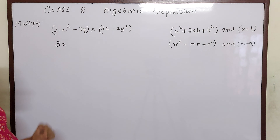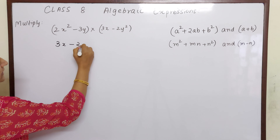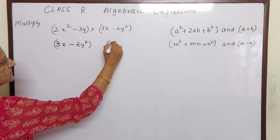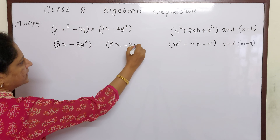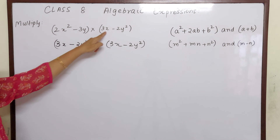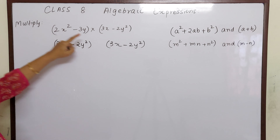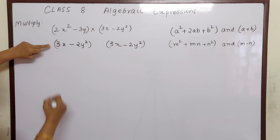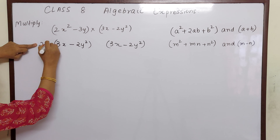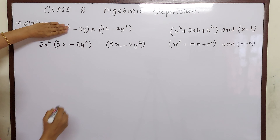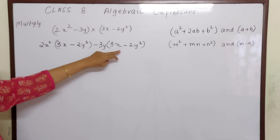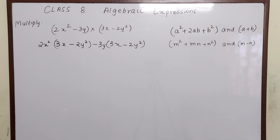But in this question both are having minus, so we can use any one to write twice: 3x minus 2y². Now we have written this twice, so now we have to distribute this algebraic expression. 2x² will come before this one, and minus 3y will come before this one. Now let us multiply.